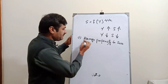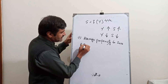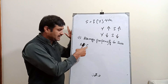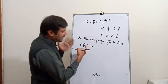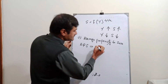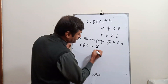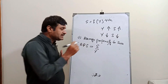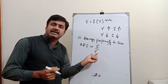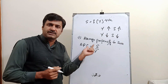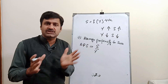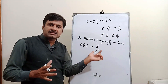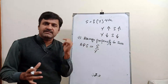Average propensity to save is denoted as APS. The formula of average propensity to save is saving over income — that is, APS = S / Y. The definition: the ratio between saving and income is called average propensity to save.